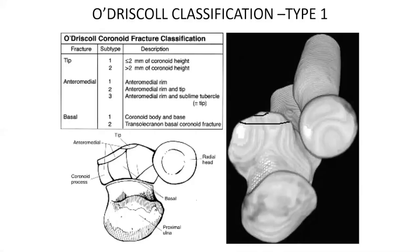More recently, in the early 2000s, O'Driscoll from the Mayo Clinic proposed a new classification for coronoid fractures based on where the fracture lines were according to anatomically defined sites of stability. This classification can only be confidently applied with the use of CT scans, preferably with 3D reconstruction.